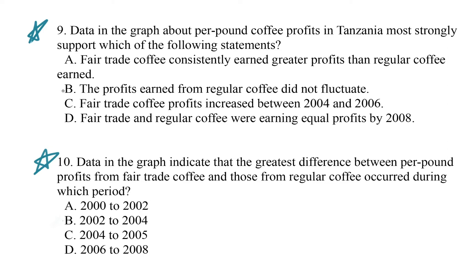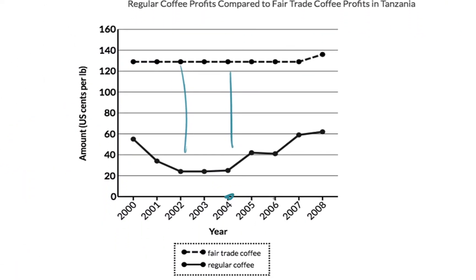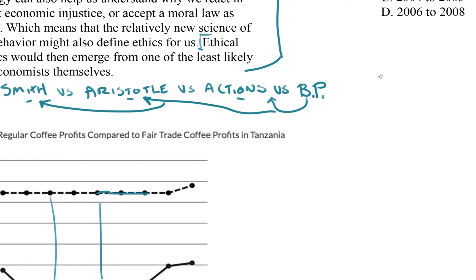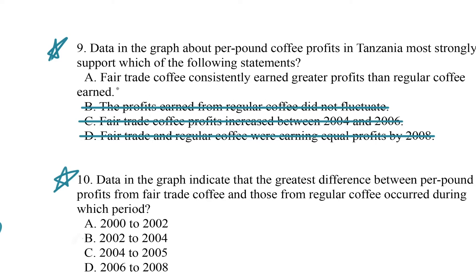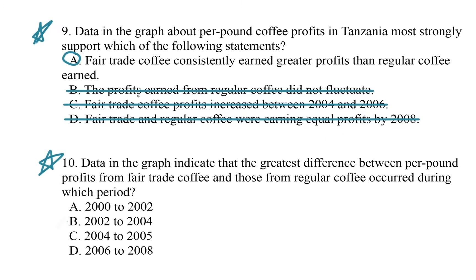Option B: the profits earned from regular coffee did not fluctuate. That's not true — we saw that it was moving around. Option C: fair trade coffee profits increased between 2004 and 2006. Let me check — but option D says fair trade and regular coffee were earning equal profits by 2008, which we know is not true because the lines never cross. Going back to the graph, between 2004 and 2006 that is a straight line, so fair trade profits did not increase. So the answer is A: fair trade coffee consistently earned greater profits than regular coffee.